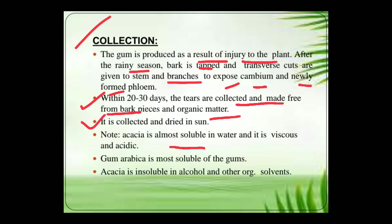Acacia is almost soluble in water and it is viscous and acidic in nature. Gum arabic is the most soluble form of the gums. Acacia is insoluble in alcohol and other organic solvents.